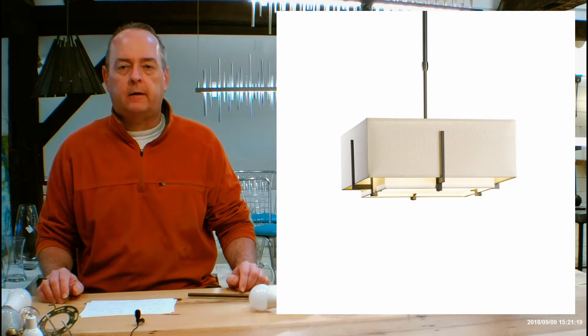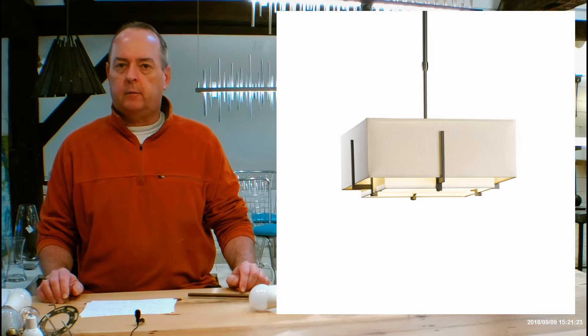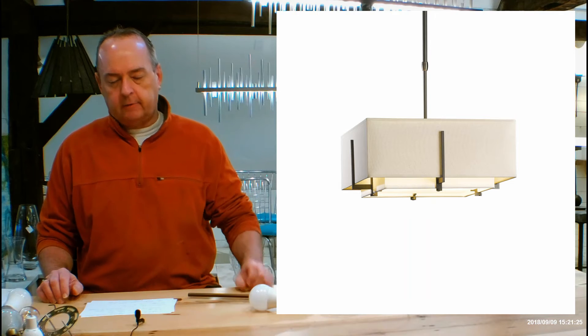Hi there, I'm Christopher Dunnigan. This is handmadeinvermont.com and today we're talking about the Hubbardton Forge Exos Square Double Shade Pendant 139625.